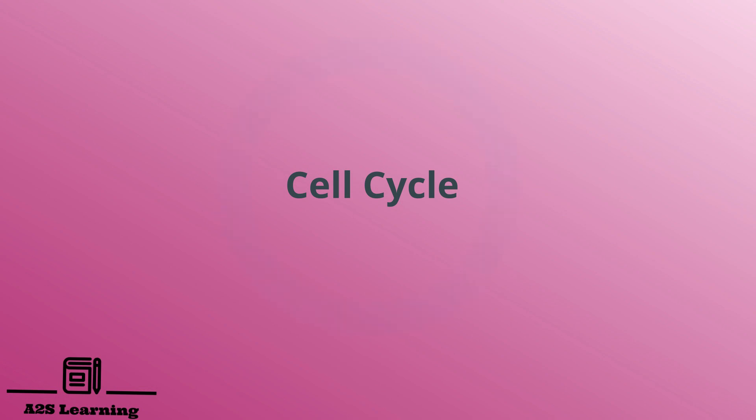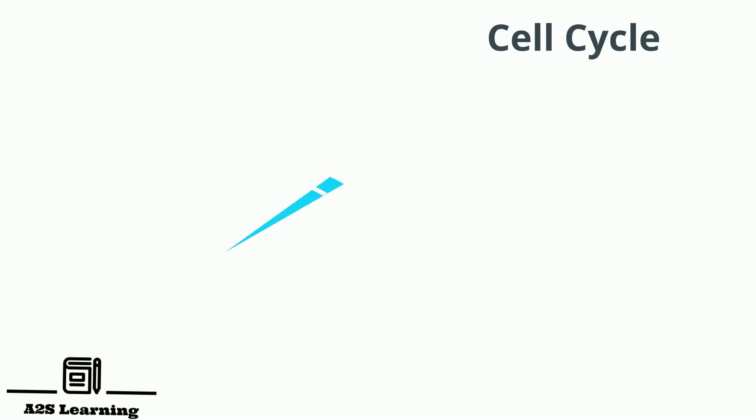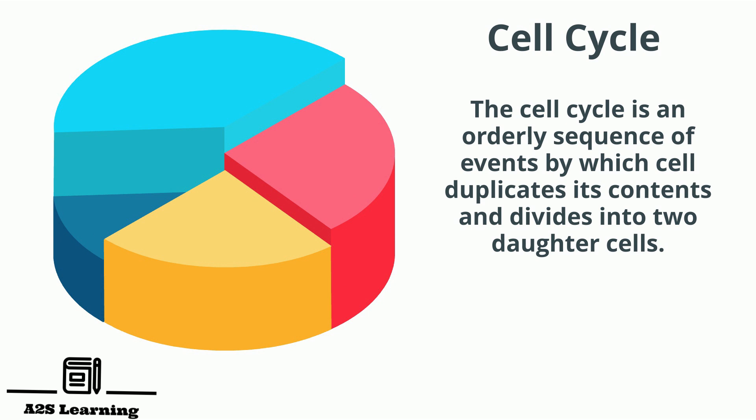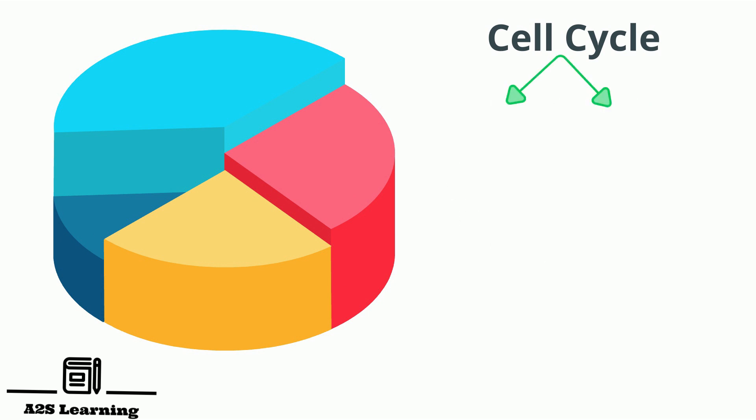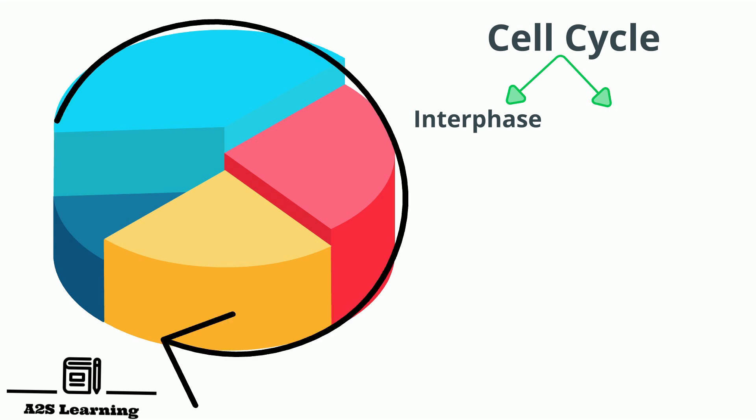The cell cycle is an orderly sequence of events by which a cell duplicates its contents and divides into two daughter cells. The cell cycle is divided into two basic phases: interphase and M phase.